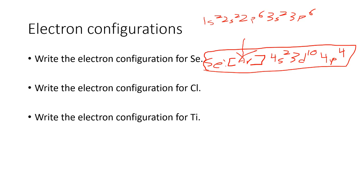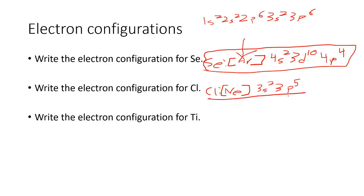For chlorine, its closest preceding noble gas is neon, which represents the first 10 electrons. Chlorine has 17 total electrons, so we only need to draw the remaining seven. It starts in the third period, giving us 3s² 3p⁵ for our seven electrons. So chlorine's configuration is [Ne] 3s² 3p⁵.